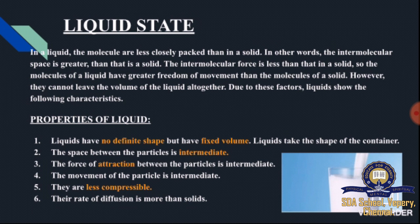Comparing with milk as a liquid: milk has no definite shape but has fixed volume. Its shape is based on the container it is placed in — when poured into a glass, it takes the shape of the glass. The space between particles is intermediate — there is more space than in a solid. The force of attraction is intermediate, and the movement of particles is intermediate — with greater freedom of movement than in a solid. They are less compressible, meaning less rigid, and the rate of diffusion is more than solids.